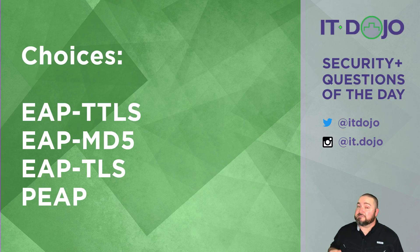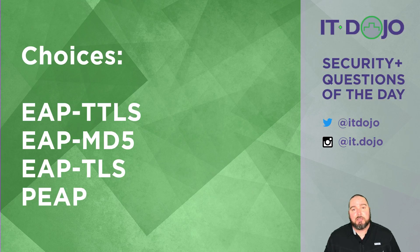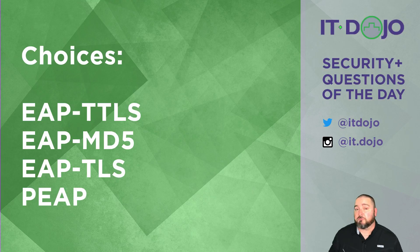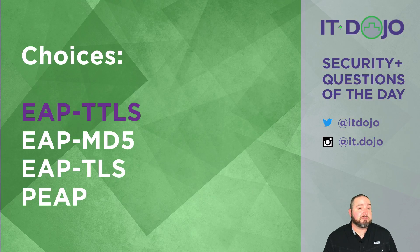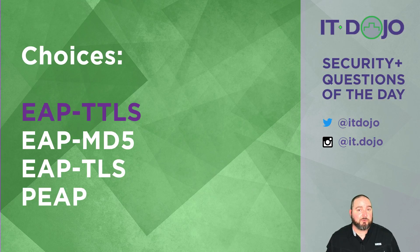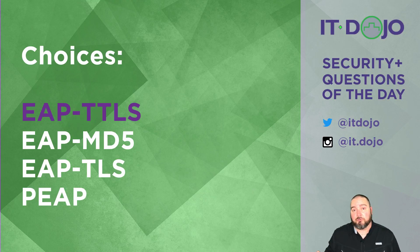First item on the list is EAP-TTLS — that's EAP Tunneled TLS. EAP-TTLS requires a certificate on the server side but does not require a certificate on the client side, so that's one of the answer choices you're looking for. The problem in corporate environments is that EAP-TTLS is not readily supported by Microsoft in the operating system, so it requires a third-party client. That's caused it to be lesser known in the Microsoft world than in the Apple or Linux world.